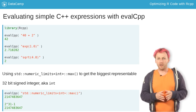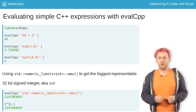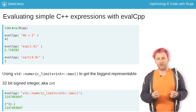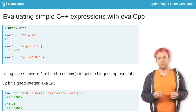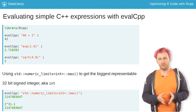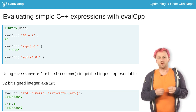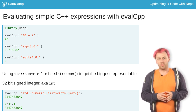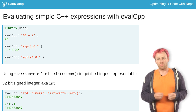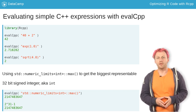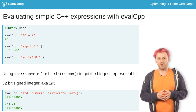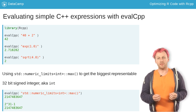As a compiled language, C++ does not offer a console for interactive use, but Rcpp has a few utilities to mimic that. The evalCpp function takes a string of valid C++ code, compiles it under the hood, and evaluates it. This is often used to check if a machine has been properly set up to use Rcpp.